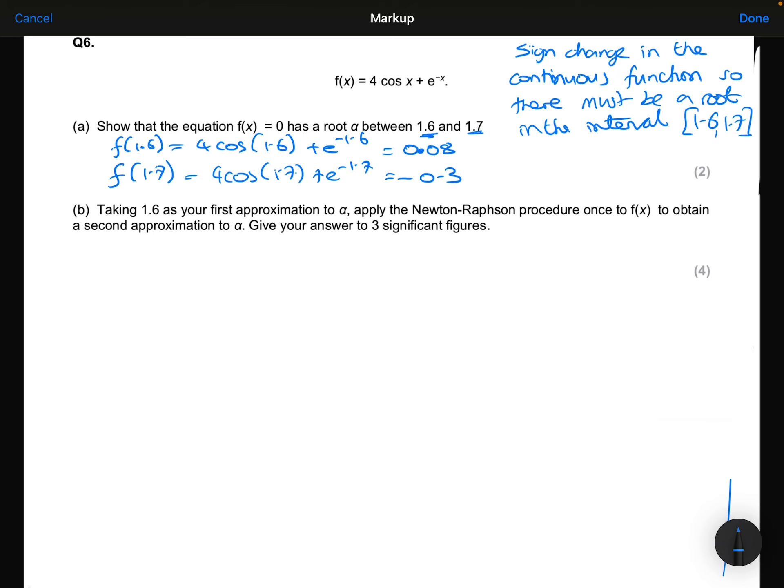Part b. Taking 1.6 as your first approximation to alpha, apply the Newton-Raphson procedure once to f(x) to obtain a second approximation to alpha. Give your answer to three significant figures.